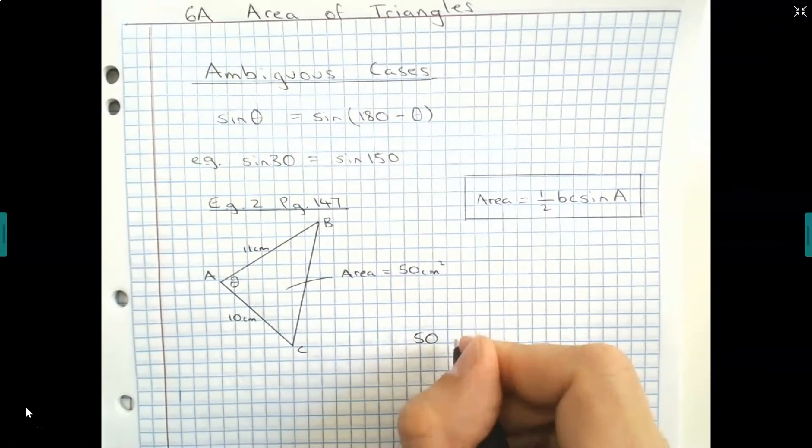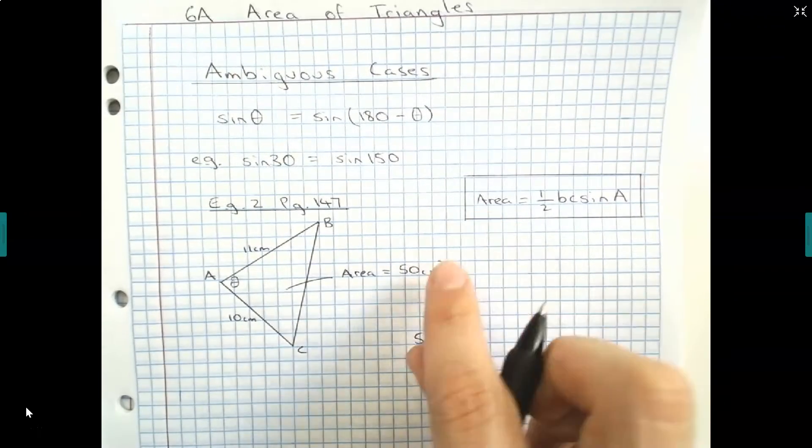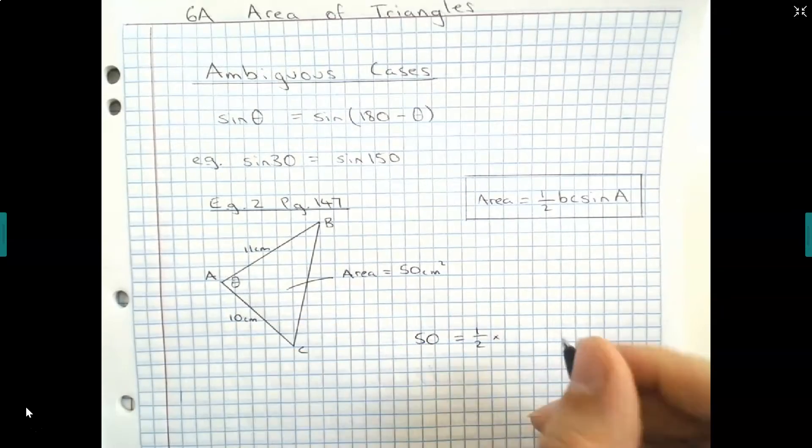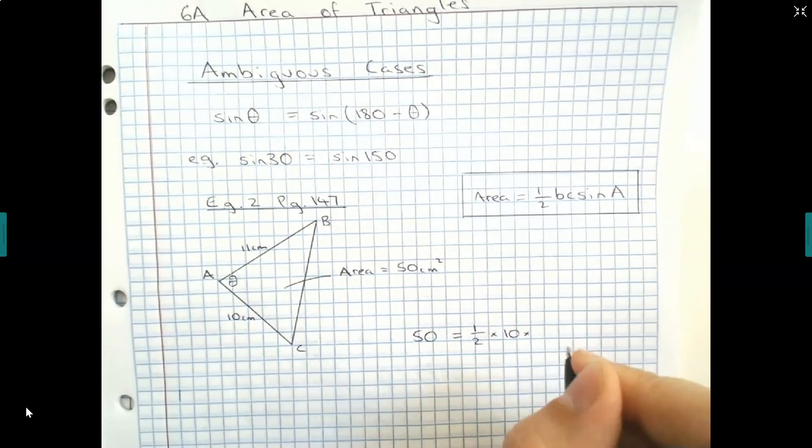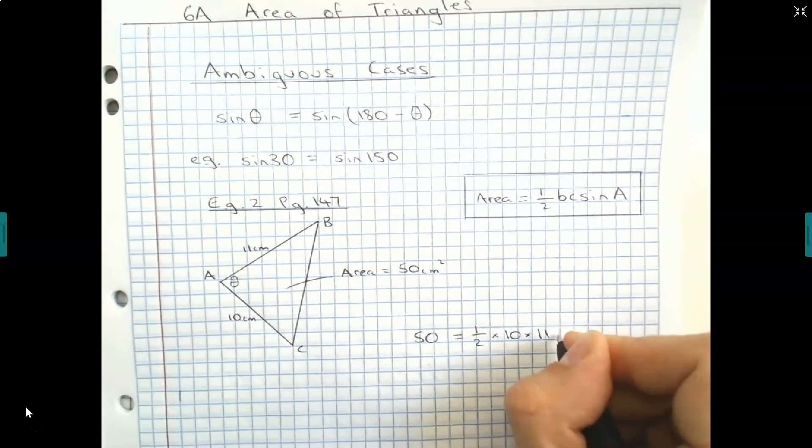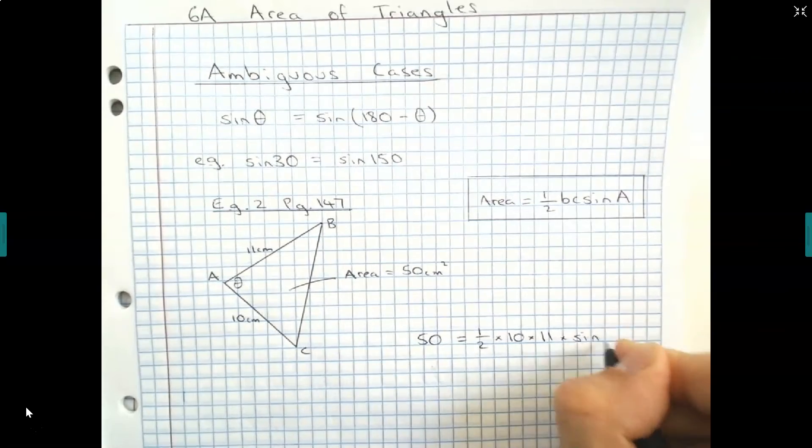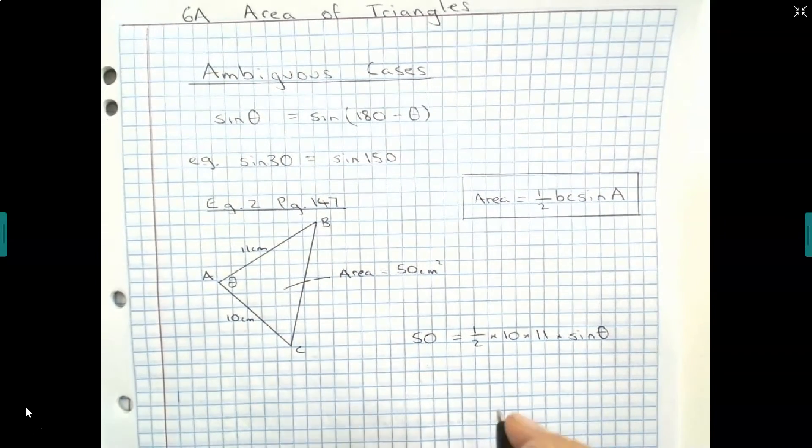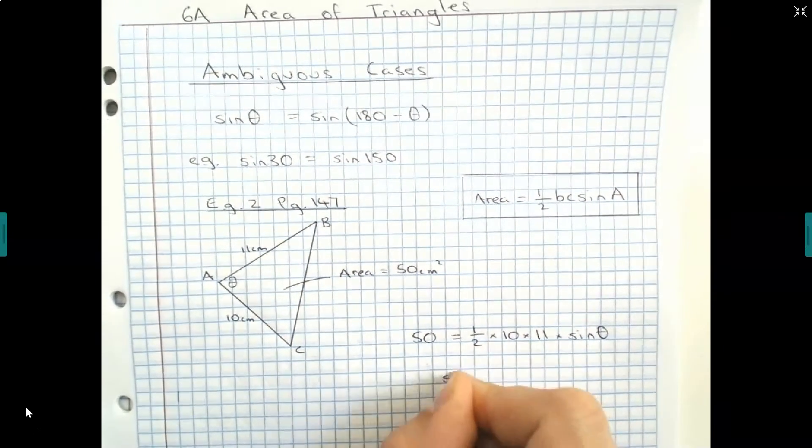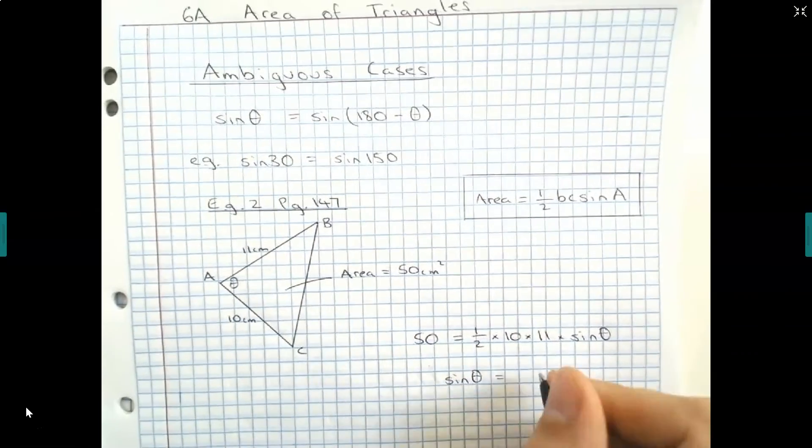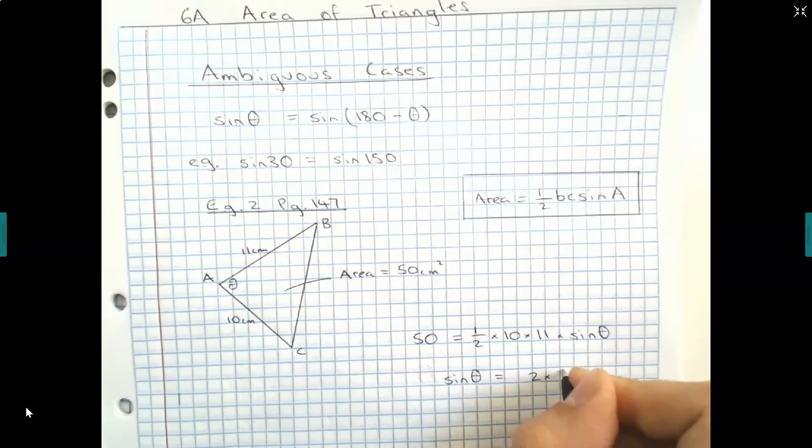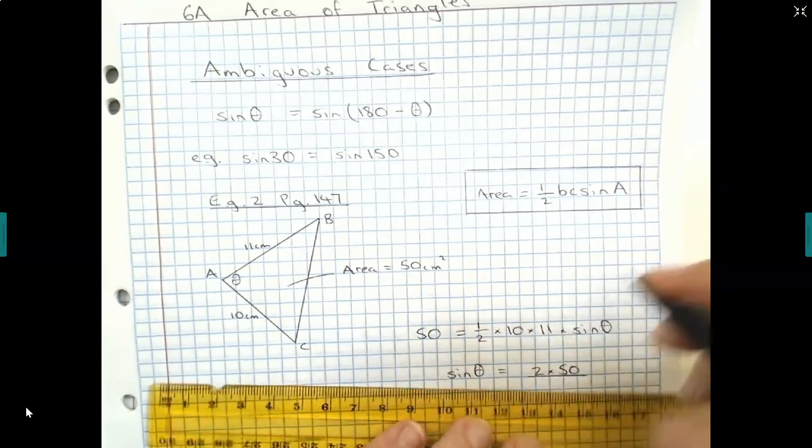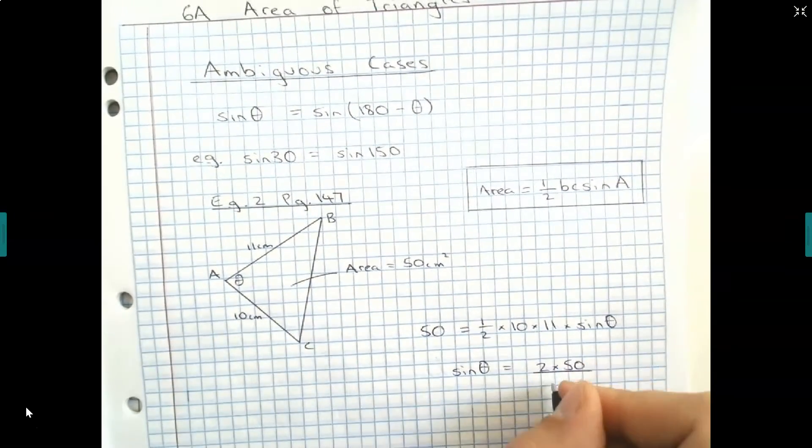So 50 is equal to half times B which is 10 times C which is 11 times sine of theta. And if we were to rearrange, we know that sine of theta is going to be equal to 2 times 50 over 10 times 11.